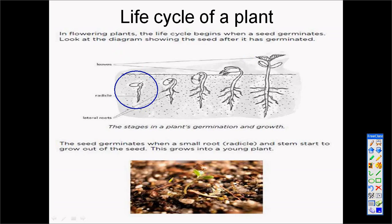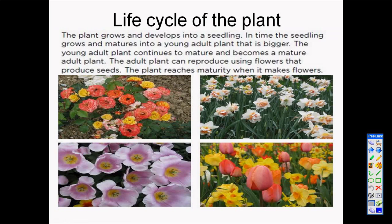The plant we see in this picture is coming from a seed. That seed germinated, started growing, and becomes a small plant that we can see clearly. In the life cycle of the plant, when we plant a seed, it starts growing and develops into a seedling. The seedling grows further and matures into a young adult plant, continuing to grow until we can see flowers.